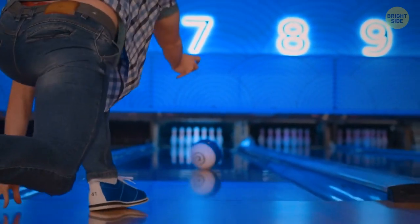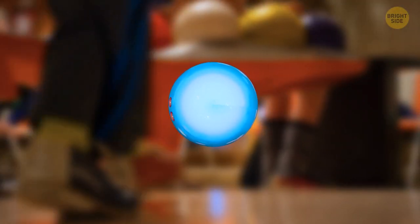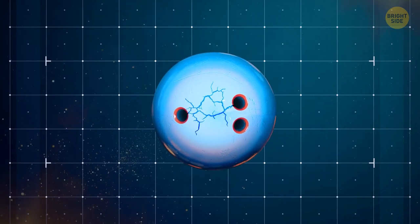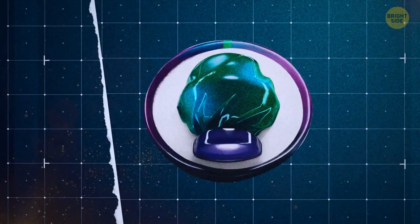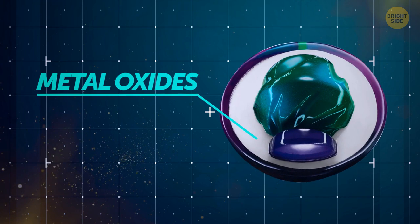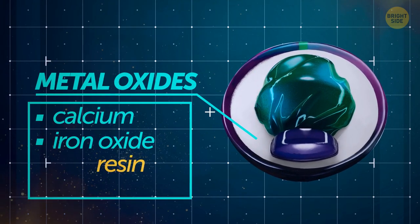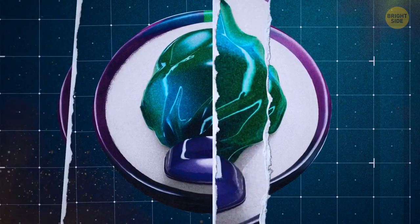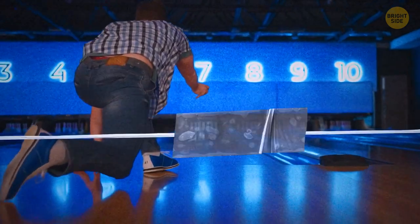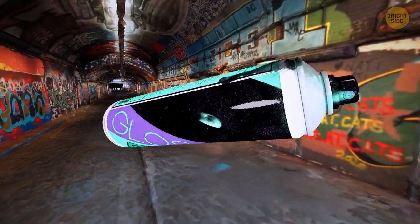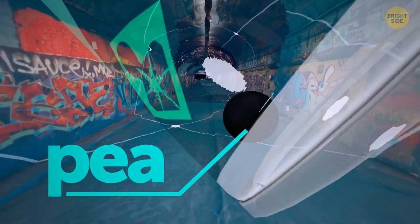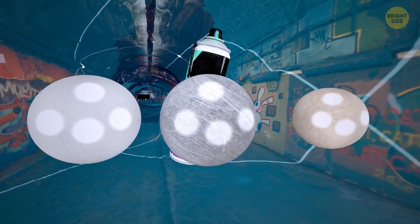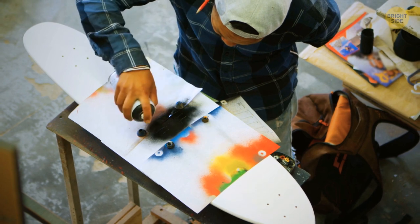Most bowling balls get damaged because of incorrect storage or temperature spikes. The inner core is made of powdered metal oxides — like calcium or iron oxide — mixed with resin and a catalyst to harden the mixture. That light-bulb shape inside is the heaviest part and influences how the ball rotates down the lane. Similarly, spray paint cans contain a small ball called a 'pea' — made of plastic, metal, or ceramic — that acts like a whisk to keep the paint mixture well-mixed before application.